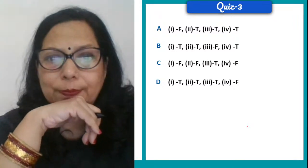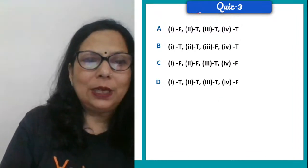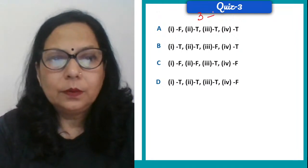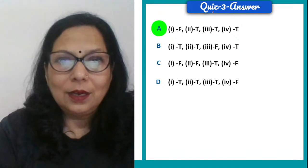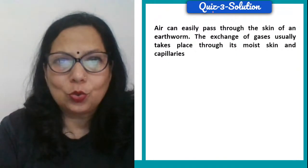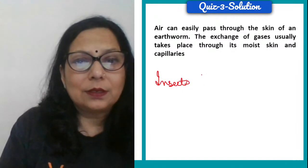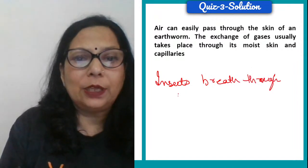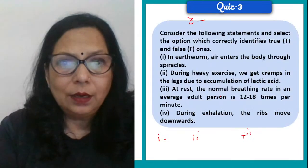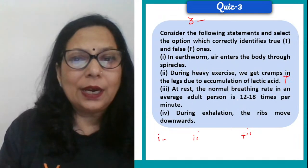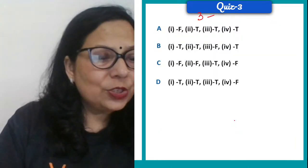The answer is A — only the first statement is false; the rest are true. Air can easily pass through the moist skin of an earthworm — the exchange of gases takes place through the moist skin and capillaries. Insects breathe through spiracles — cockroaches breathe through spiracles. Earthworms breathe through moist skin. During heavy exercise we get cramps — that is true. The breathing rate of 12 to 18 times per minute — true. During exhalation, ribs move downwards, and during inhalation they move upwards — true.